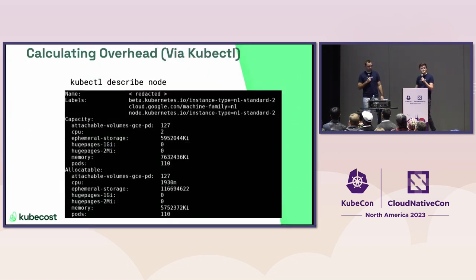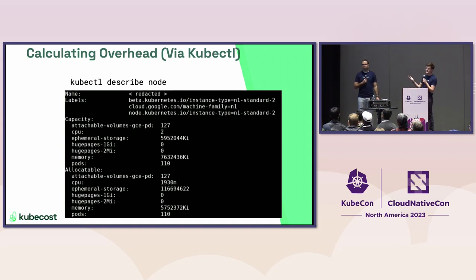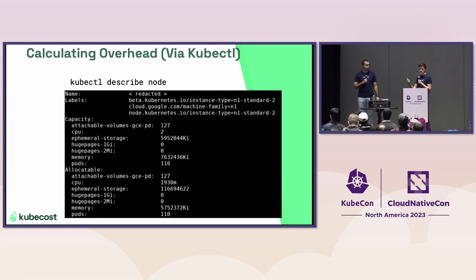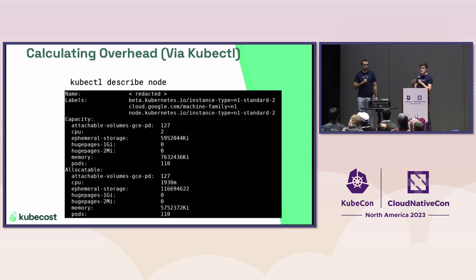You can see from kubectl describe, or any Kubernetes API request about nodes in your cluster, the capacity and allocatable values and the difference immediately. This is a slightly trimmed response from an N1-standard-2. We have the capacity block and the allocatable block. Comparing 2 CPU capacity versus allocatable 1930m — not too much of a loss there. But looking at memory, we see a stark difference: 7.5 gigs of capacity versus about 5.5 gigs allocatable. That's a big loss, especially for a small node type. Some of this information is accessible to you today in your cluster.